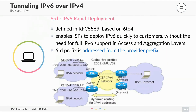Another option is 6RD — IPv6 Rapid Deployment — mainly used by providers. It is defined in RFC 5569 and is loosely based on 6to4. It enables ISPs to deploy IPv6 quickly without the need for full IPv6 connectivity in their backbone. You only need IPv6 on the CE routers — the routers closest to the customer.